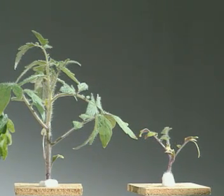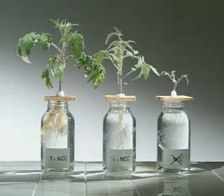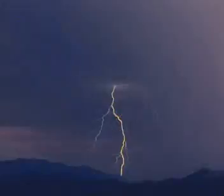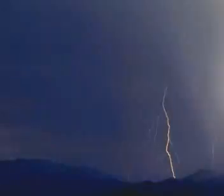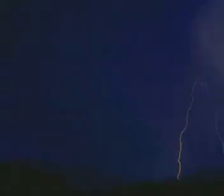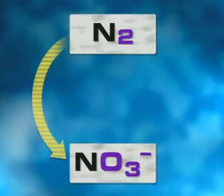So where does the nitrate present in the soil come from? Lightning provides a small amount — it converts nitrogen gas present in the atmosphere directly into nitrates.